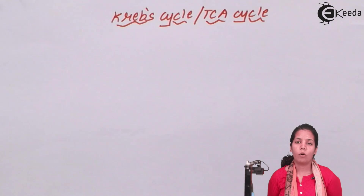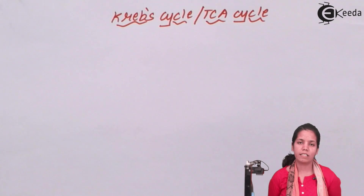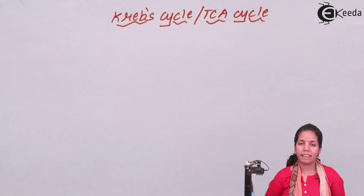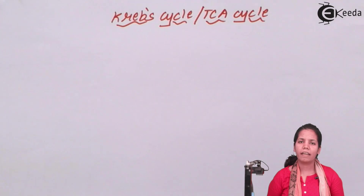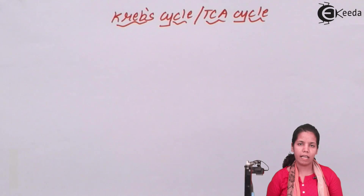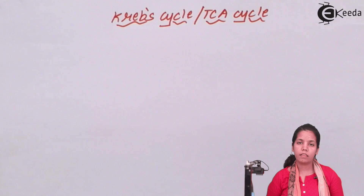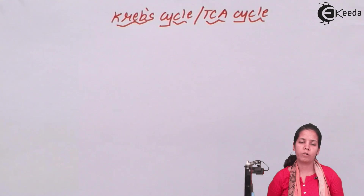Krebs cycle — Hans Krebs was a scientist who discovered this Krebs cycle. That is the reason Krebs' name came into picture. It is also called the TCA cycle or tricarboxylic acid cycle because the first stable product formed has 3 carbons.